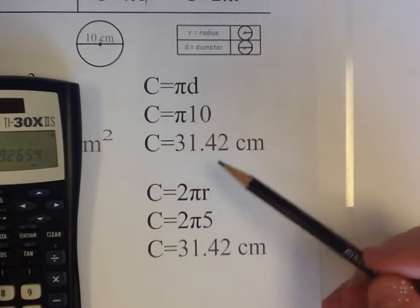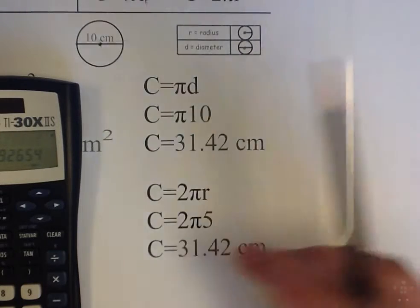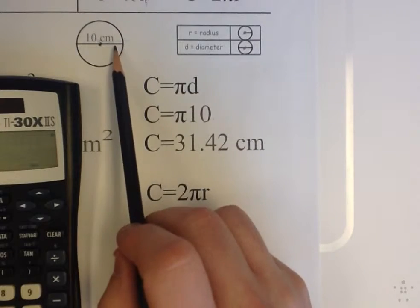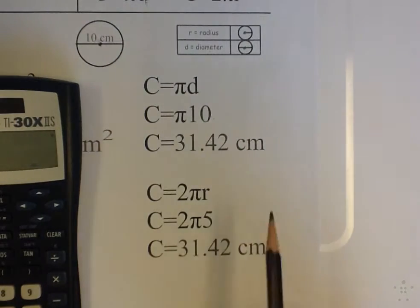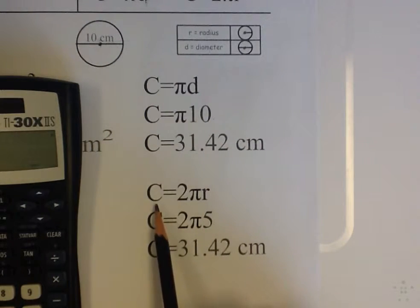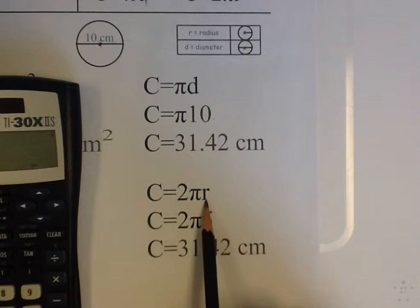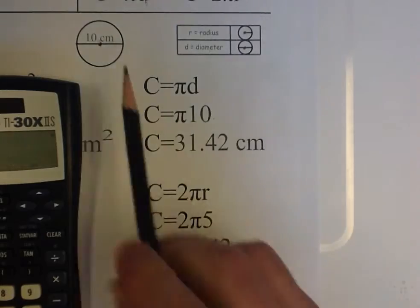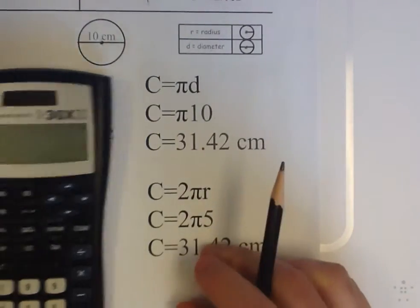I could use the other formula easily. I just have to figure out what the radius is first. And my radius, once again, if my diameter is 10, my radius would be half of that, 5. So my formula is C equals 2 pi times the radius. C equals 2 pi times the radius, which we know is 5, so we'll plug that in.